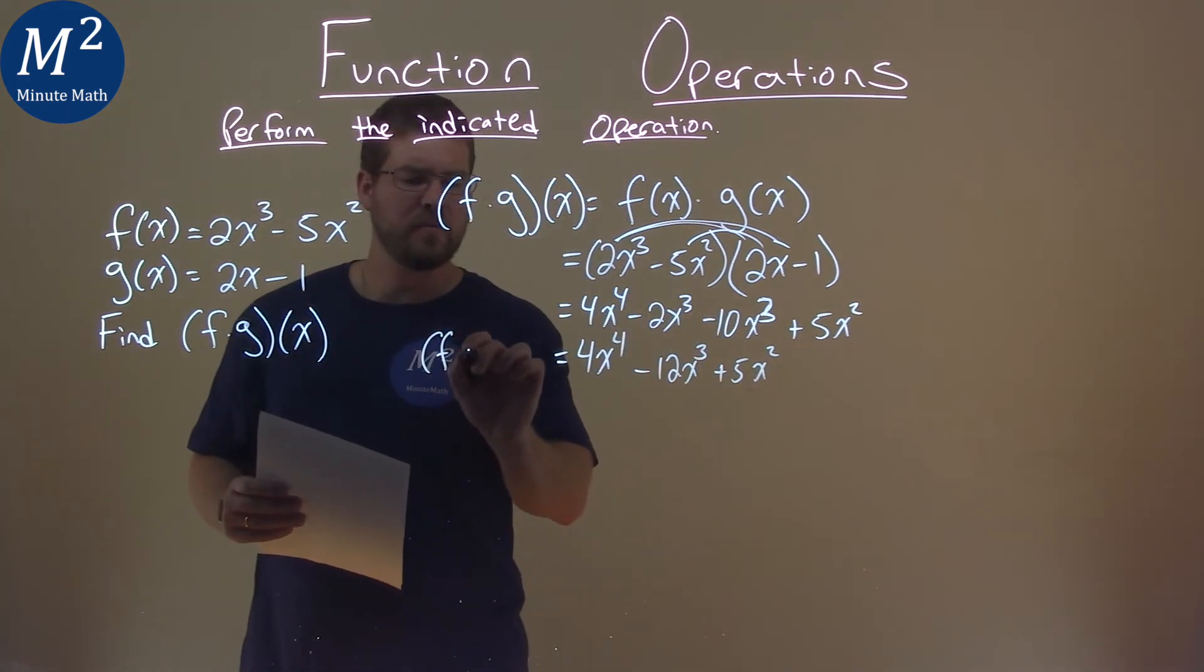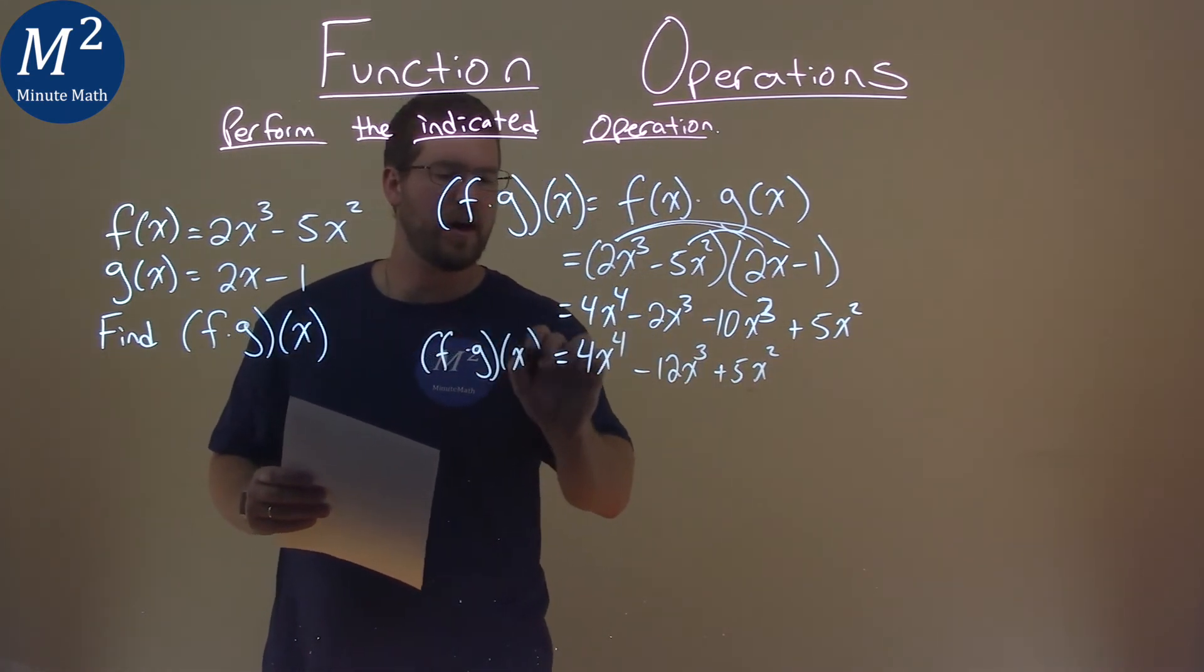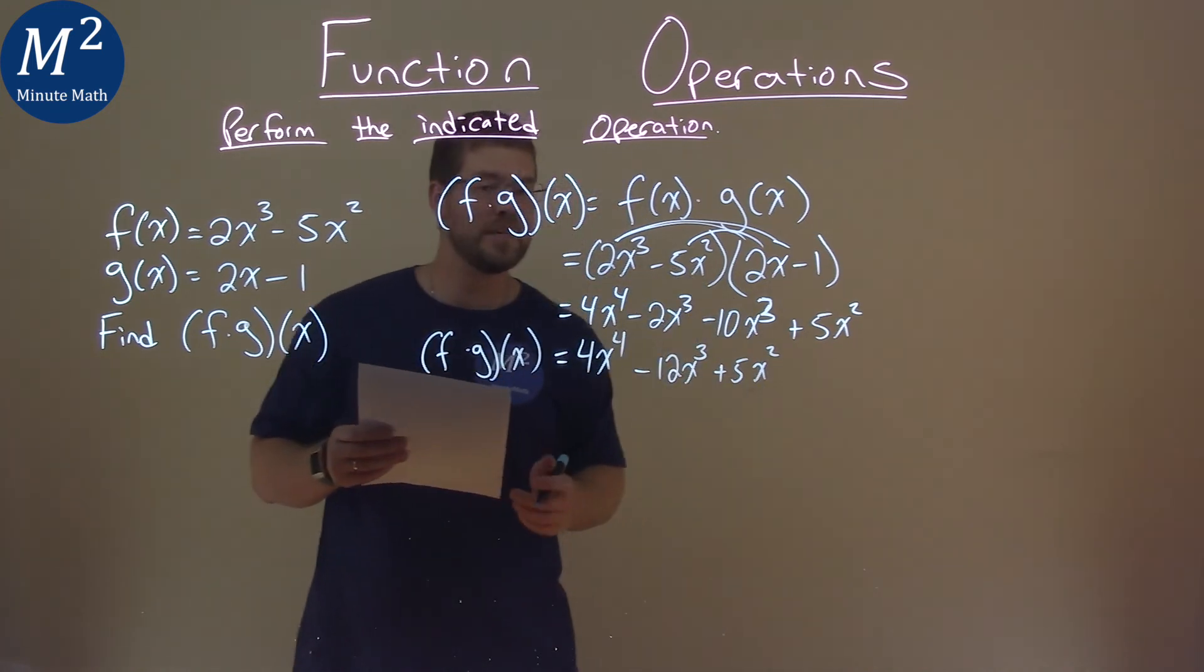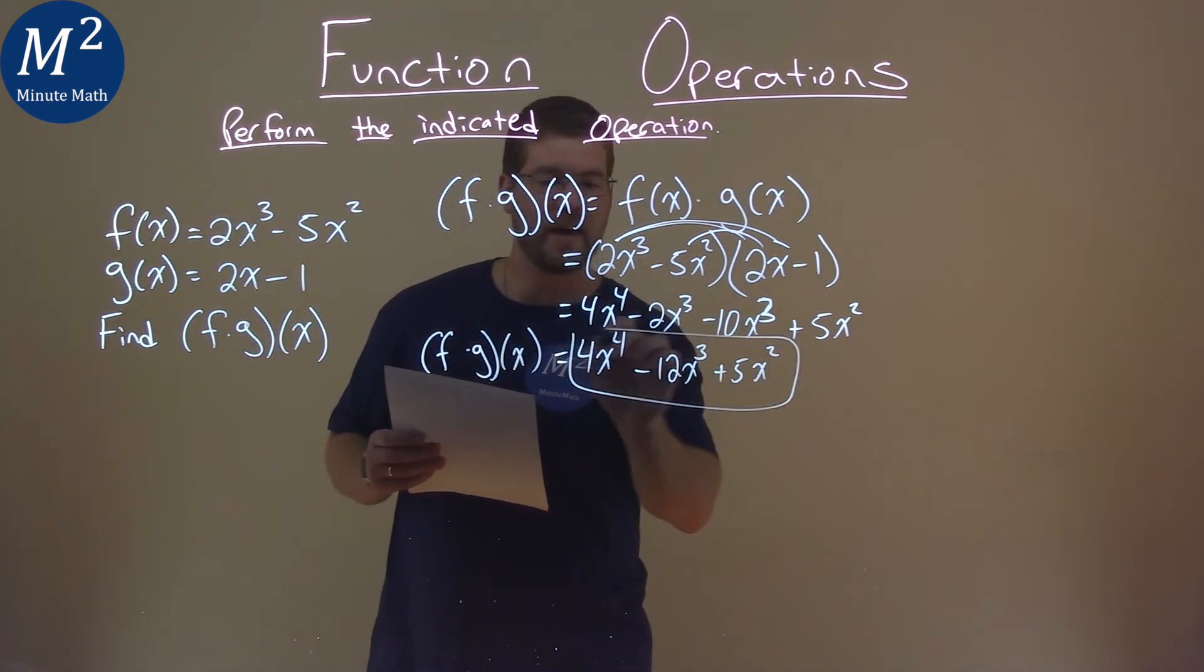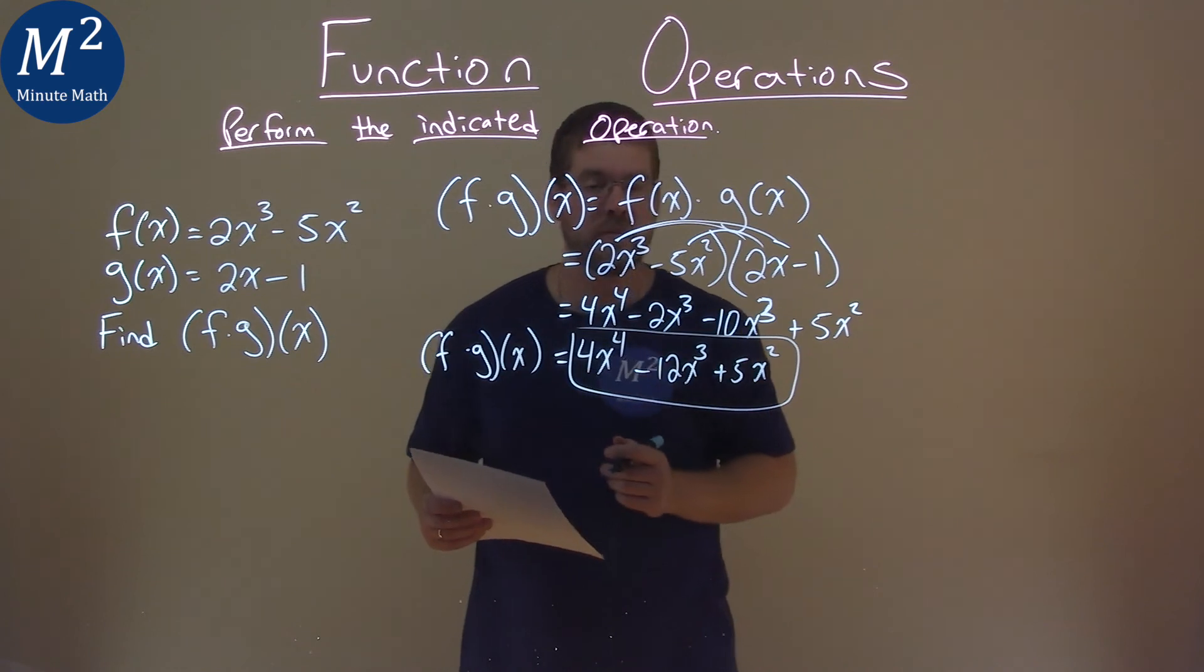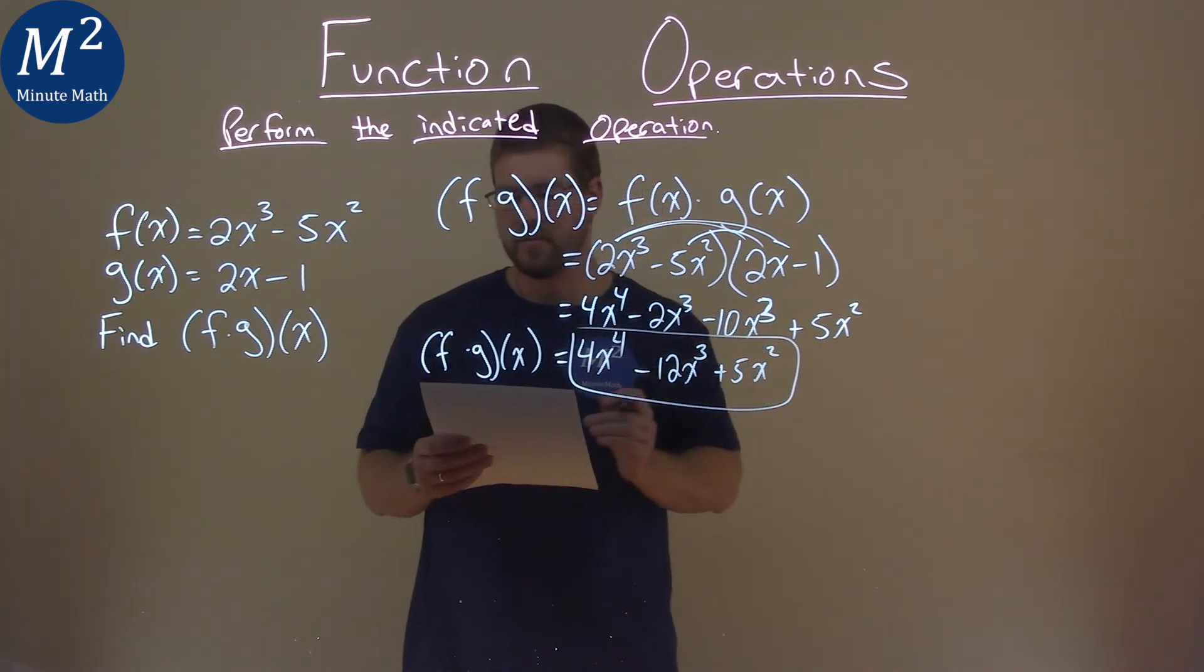And this right here is our final answer, our f times g of x, which is equal to 4x to the fourth power minus 12x to the third plus 5x squared.